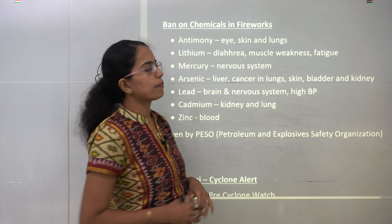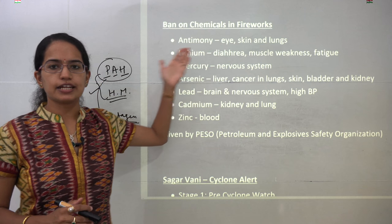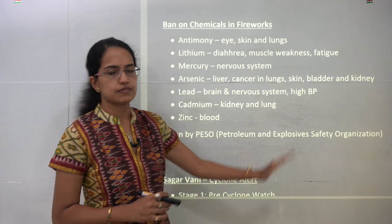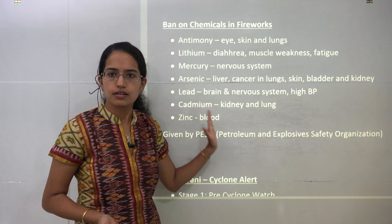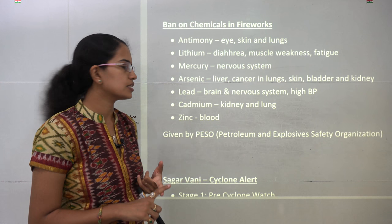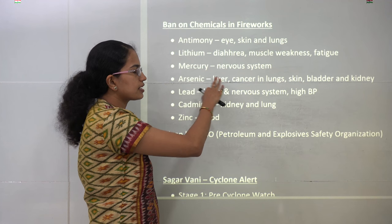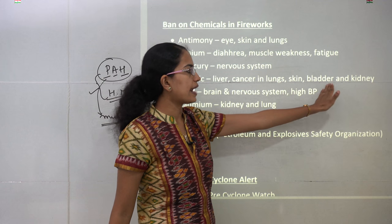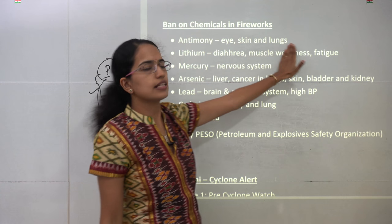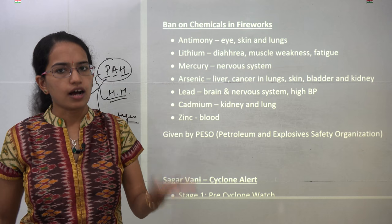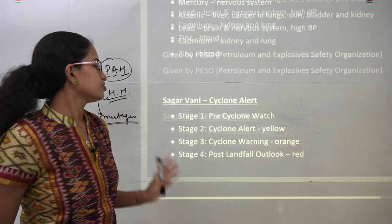There is a complete ban on some substances used in fireworks, laid down by PESCO — the Petroleum and Explosive Safety Organization. Banned elements include: zinc, which affects blood and causes blood toxicity; cadmium, affecting lungs and kidneys; lead and mercury, affecting the nervous system; arsenic, affecting the liver and causing cancer in lungs, skin, bladder, and kidney; lithium, causing muscle weakness and fatigue; and antimony, affecting eyes, skin, and lungs. There could be a direct question on which element affects which part of the body.